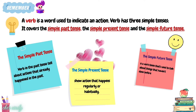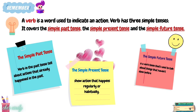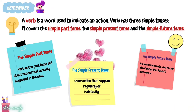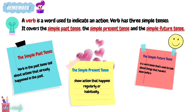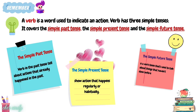Remember: a verb is a word used to indicate an action. Verbs have three simple tenses: the simple past tense, the simple present tense, and the simple future tense. Verb in the past tense tells about actions that already happened in the past. The simple present tense shows action that happens regularly or habitually. And the simple future tense is used to talk about things that haven't happened yet.